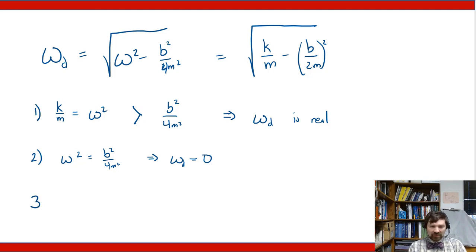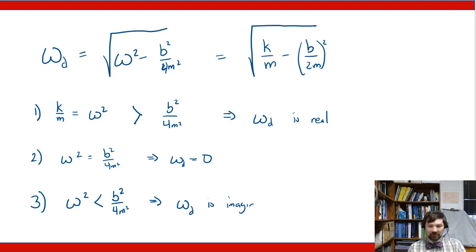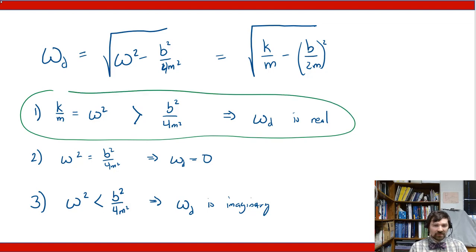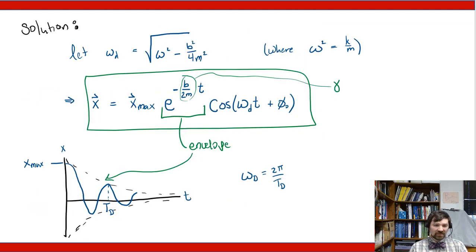The third case is overdamped: when omega squared is less than b squared over 4m squared, omega_d would be imaginary. That's the overdamped regime. The solution we've been discussing — the cosine form — is really meant for the underdamped real case, which is what the graph corresponds to.